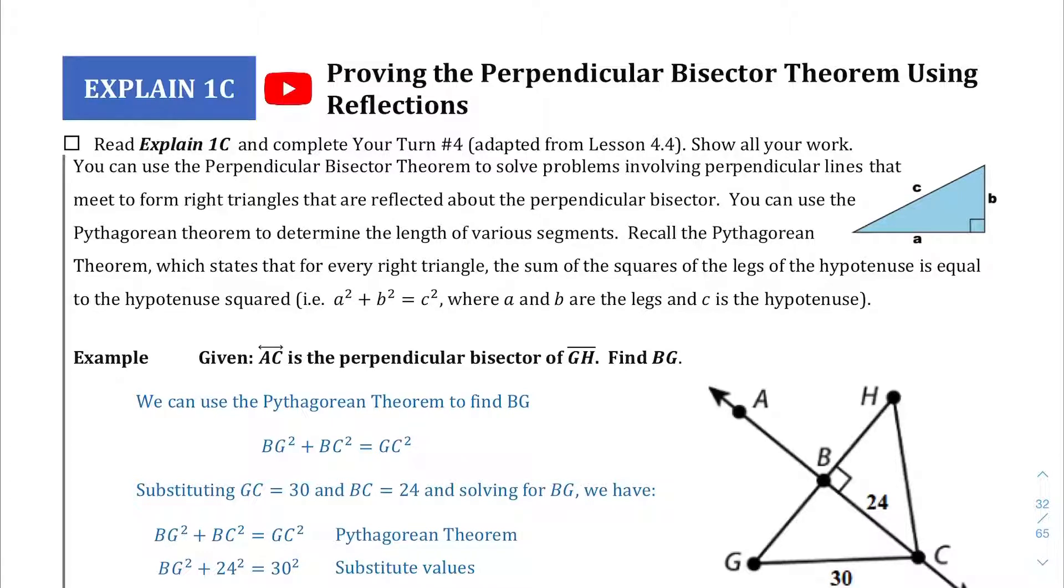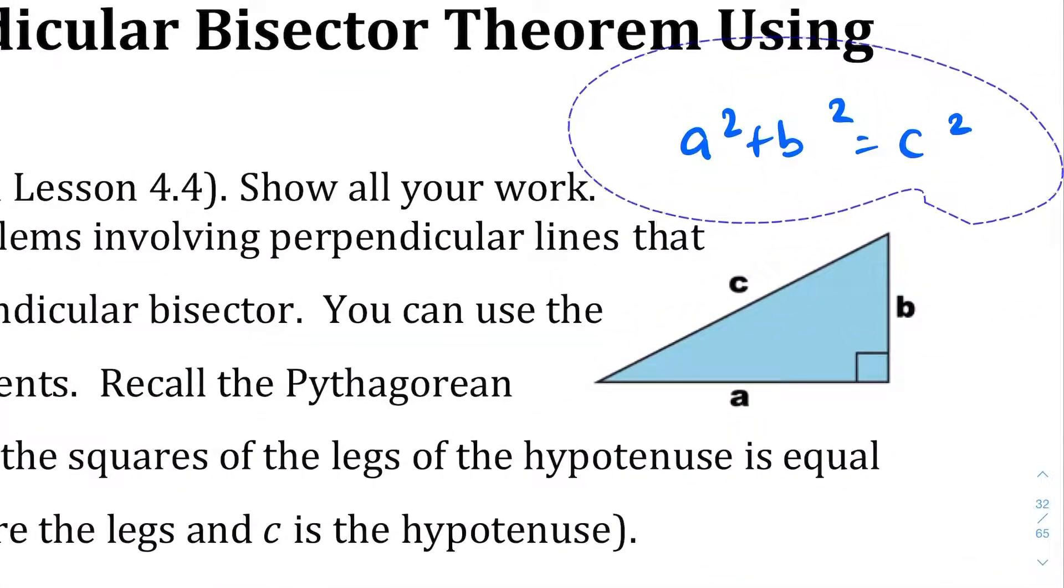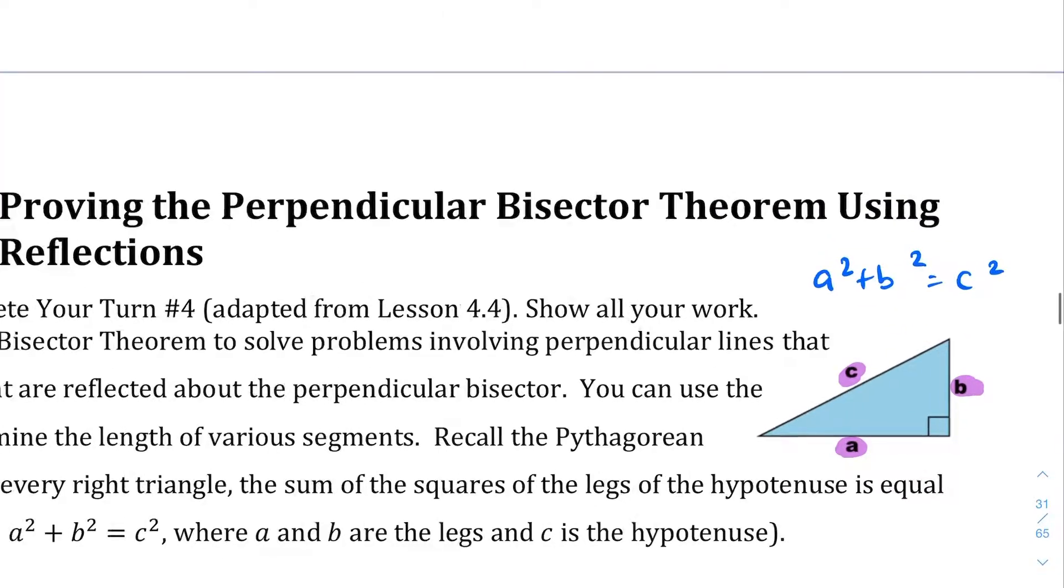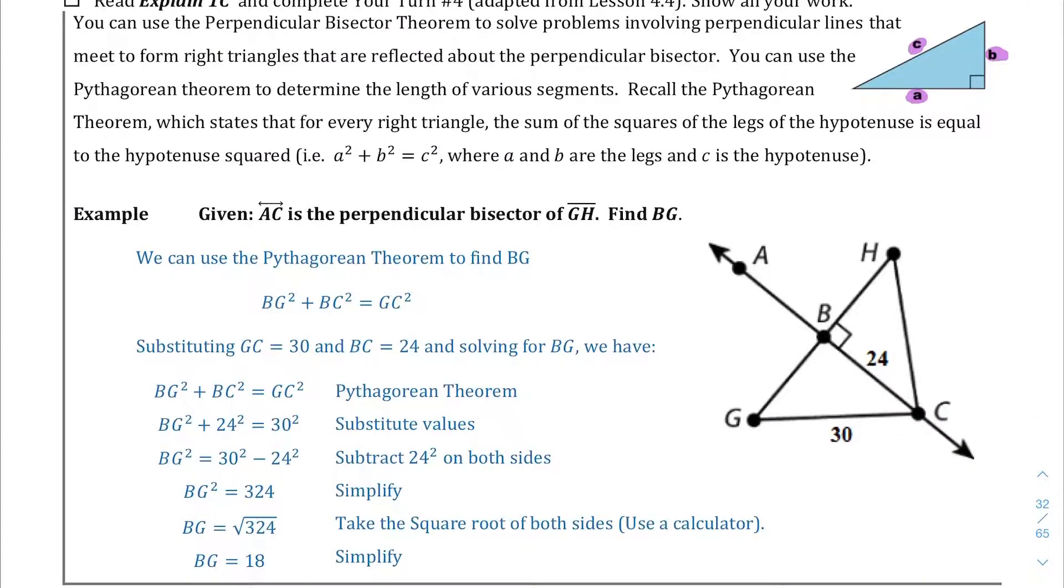In this Explain 1C part, we're going to get into proving the perpendicular bisector theorem using reflection. And specifically, we're going to be using the Pythagorean theorem to find some of these things. If you don't remember what the Pythagorean theorem was, it's A squared plus B squared equals C squared. This actually goes along with this triangle over here. The Pythagorean theorem says if you take this side A and you square it, and then also you take B and you square it, it's going to equal the hypotenuse squared. Using that theorem, if we know at least two of the sides of a right triangle, you can always find the third side. Later on in trigonometry, you'll find that it doesn't always have to be a right triangle, but for now we're only going to be working with right triangles.